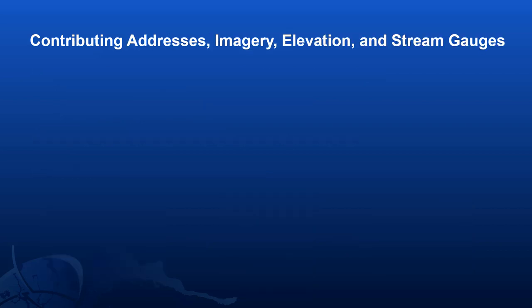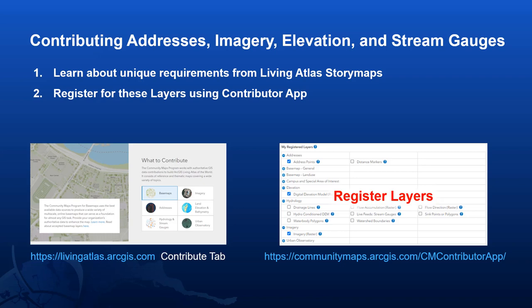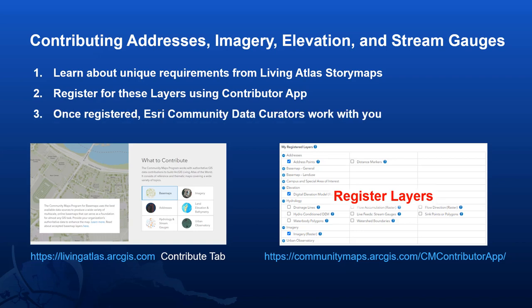Let's talk for a minute about contributions of other types, such as addresses, imagery, elevation, and stream gauges. These different types have unique requirements, and you can learn about those requirements directly from the Living Atlas story maps mentioned earlier. Once you know about these requirements, the next step is to register for these layers using the contributor app. When you're registered, community map curators in those respective areas are notified and will directly work with you on any of the next steps.